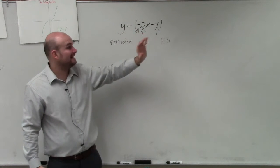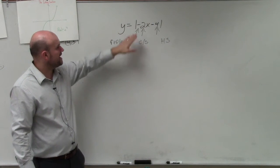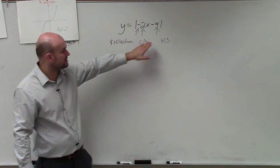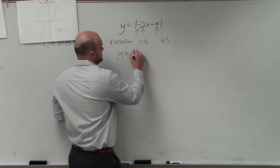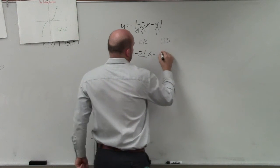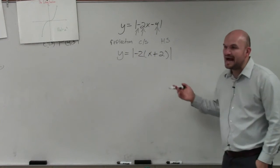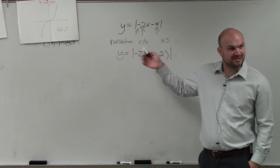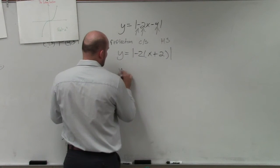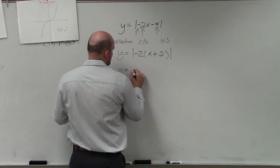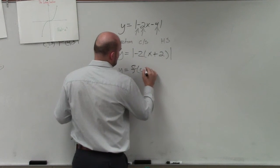Any time you see something where you have either a reflection or a compression/stretch as well as a horizontal shift, you want to make sure you factor out that negative 2. If you remember the compression thing, y equals f of cx, right?